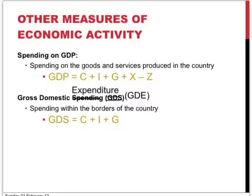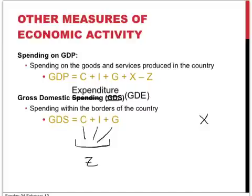The alternative is to look at gross domestic expenditure, or GDE. Gross domestic expenditure is the spending that occurs within the country. In this case there is no mention of exports, because spending on exports occurs outside the borders of the country. For each component — consumption spending, investment spending, and government spending — they will all have an element of imported goods included within that spending. So GDE consists of C plus I plus G.